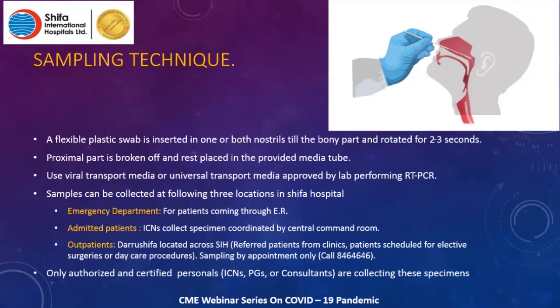Afterwards, the proximal part of the swab is broken off and the rest is placed in the provided media tube. This media should be standardized and recommended by the lab performing the PCR testing — either viral transport media (VTM) or universal transport media (UTM). It is advisable to use the standard VTM or UTM rather than less established media.